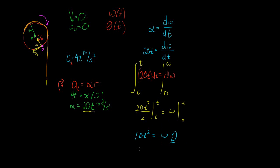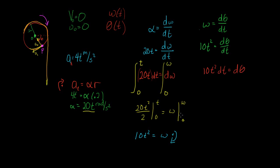Now that we have an expression for omega, we can find angular position as a function of time. We know omega equals the derivative of angular position theta with respect to time, and omega equals 10t². Separating variables again, we get 10t² dt equals d-theta. We integrate from 0 to t on the time side and from 0 to theta on the angular position side.